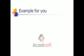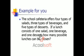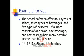Here's a sample space example. A school cafeteria offers four types of salads, three types of beverages, and five types of desserts. If a lunch consists of one salad, one beverage, and one dessert, how many possible lunches can be chosen? Pause the video to figure it out. We take the four salads, three beverages, and five desserts and multiply them together: four times three is twelve, times five is sixty. Sixty lunches is our answer.